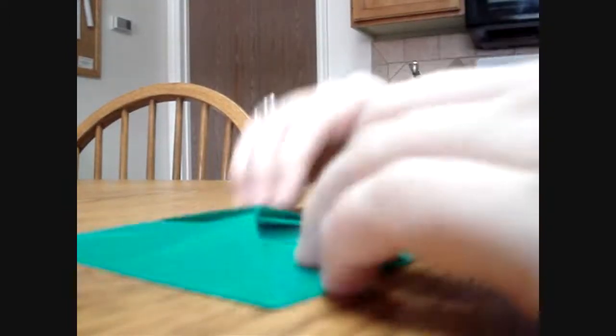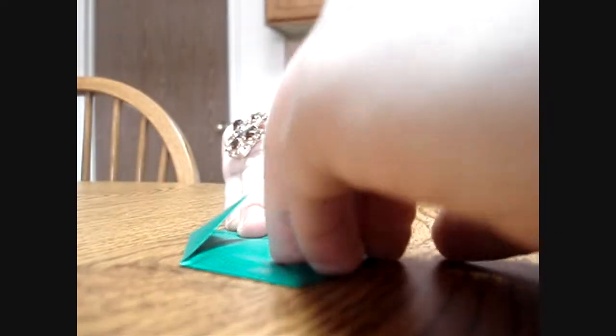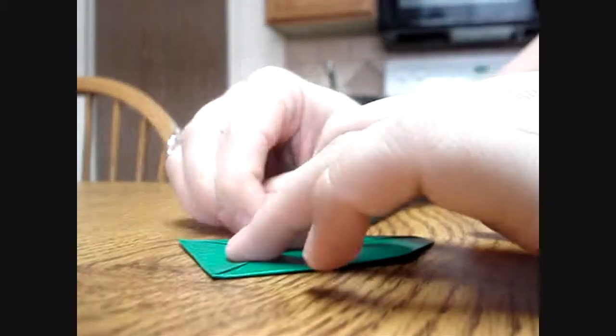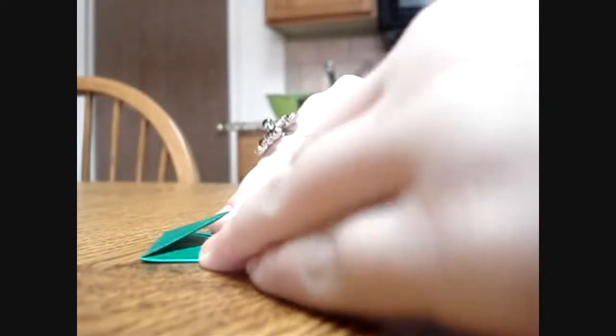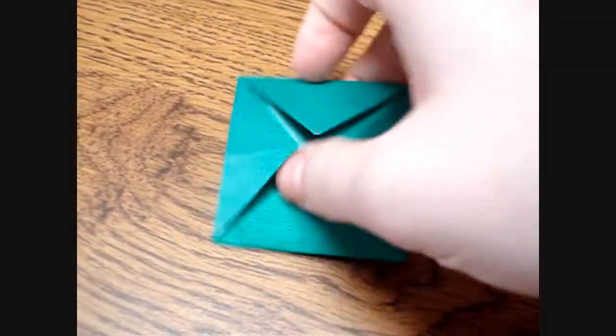And then once you've done that, you're going to do the same thing again. And then you're going to do the same thing again. And you want to make sure that you line them up as nicely as you can. And as this thing gets smaller, it's going to get harder and harder to fold. So you want to make sure you make your creases as sharp as you can.